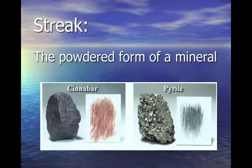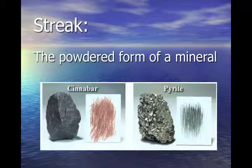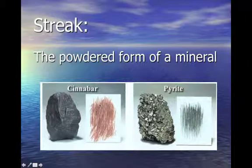The streak of a mineral refers to its powdered form. We can rub a mineral on different objects, and if it leaves a streak, that streak will have a specific color. Sometimes that color will match — like with pyrite, where the streak pretty much matches the color of the mineral. But with cinnabar, the streak color is totally different than the actual mineral. So we can use streak as an identifying factor.